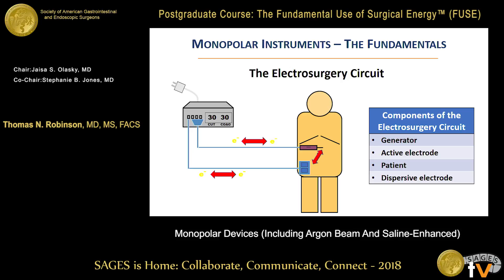Direct current flows in one direction. But let's look at the four pieces of the electrosurgery circuit because we've got to know these. We have the generator, and we have the active electrode — there's a wire that goes to it. The active electrode, you can think of as the bovie pencil; that's the tool you're holding in your hand. The clinical effect happens right there. The patient is part of the electrosurgical circuit because the current leaves the active electrode, goes to the dispersive electrode, and then goes back to the generator — that's the completion of the circuit. You should be able to point to those and know their names.